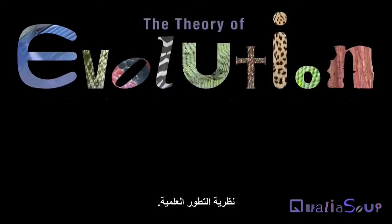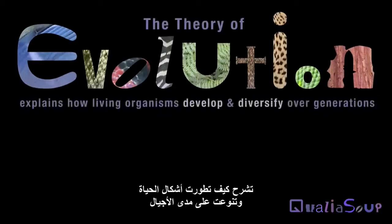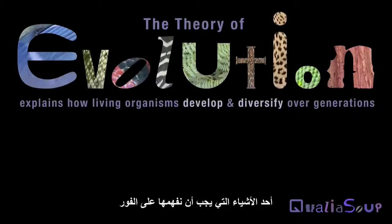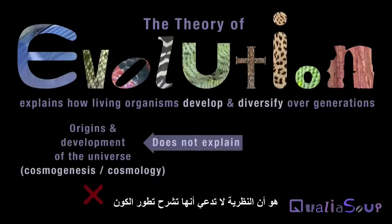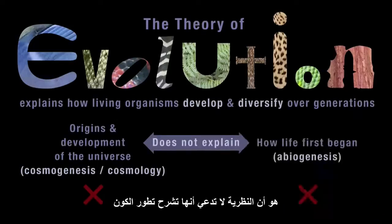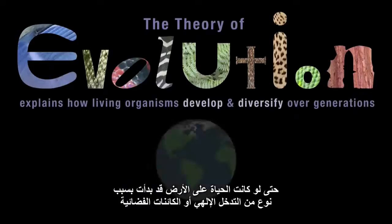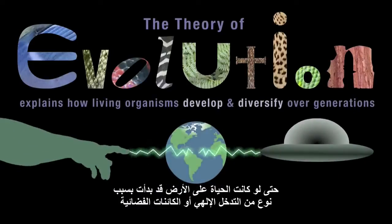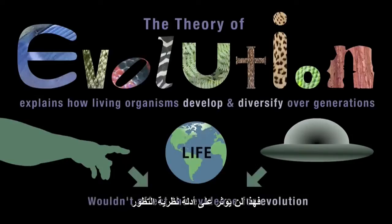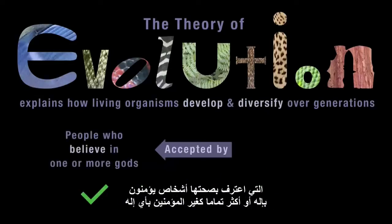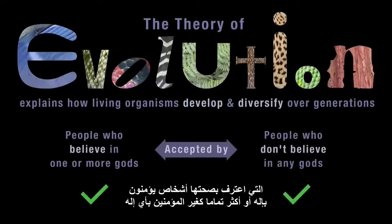The Scientific Theory of Evolution explains how lifeforms develop and diversify over generations. It doesn't claim to explain the development of the universe or how life was first begun — it explains how new varieties of lifeform emerge from earlier lifeforms. Even if life on Earth had been initiated by some kind of divine or alien intervention, that wouldn't affect the evidence for evolution, which is accepted by people who believe in one or more gods as well as those who don't.